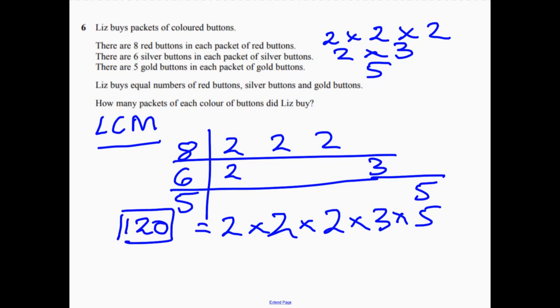So that's how many red buttons, silver buttons, gold buttons we're actually going to need. So to work out for each packet, red will be 120 divided by 8, which is 15. So that was red.